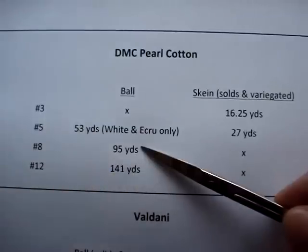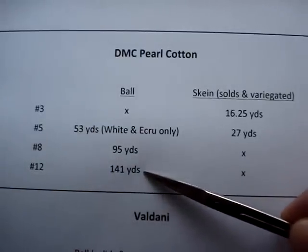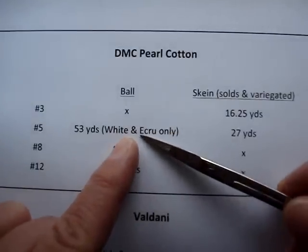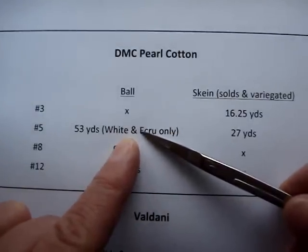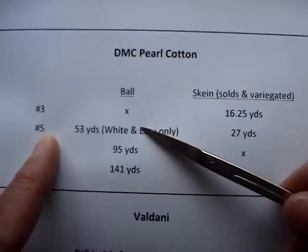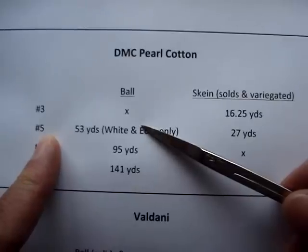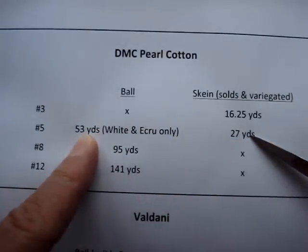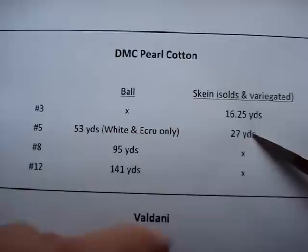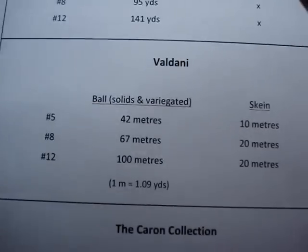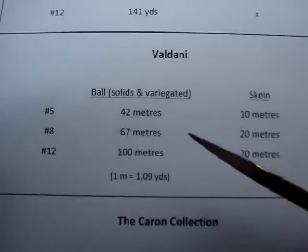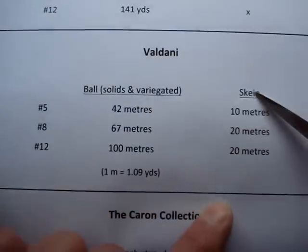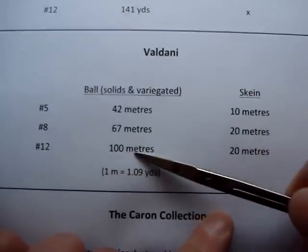The number eight pearl cotton is in a ball with 95 yards, and the number 12 pearl cotton is in a ball with 141 yards. So if you have an older pattern that says one ball of number five is required and it's a color, you'll need to get two skeins to equal that one ball — keep that in mind.